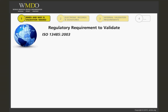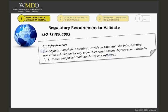Section 6.3 Infrastructure states that the organization shall determine, provide, and maintain the infrastructure needed to achieve conformity to product requirements, and that the infrastructure includes process equipment, both hardware and software.